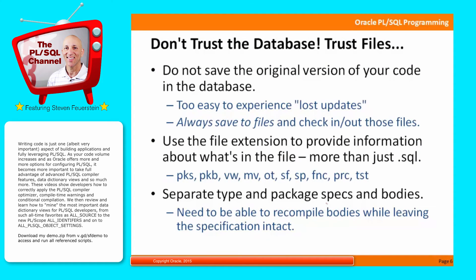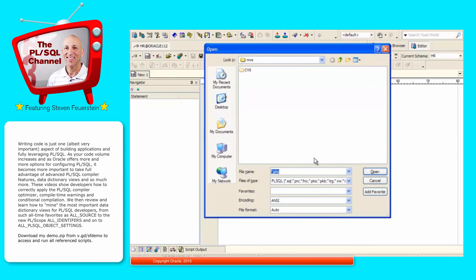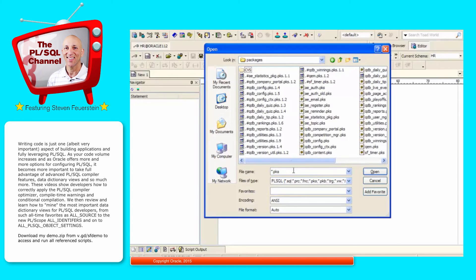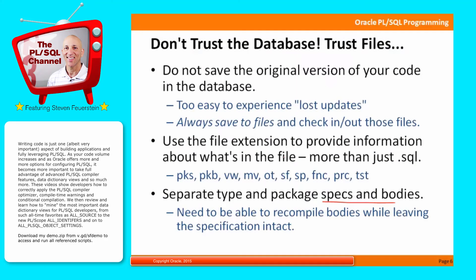Separate type and package specs and bodies into separate files. When you're building a package or an object type, separate out all your package specs and bodies. This is actually the back-end code for the PLSQL challenge — I've got a number of PKS files, which are the package specs, and PKB files for my package bodies. The reason is I want to be able to make changes to one without affecting the other. Package specifications tend to stabilize relatively quickly, but we're constantly making changes to the package body. In older versions of Oracle, if you recompile a package spec even if the code hasn't changed, Oracle will invalidate all the programs that reference that package. You get a lot more flexibility by separating these elements into separate files.